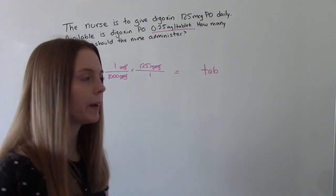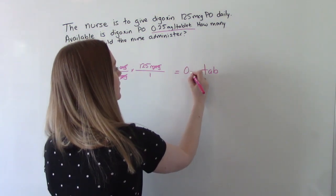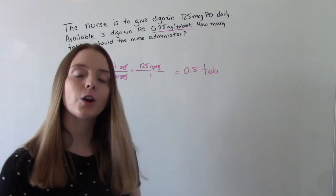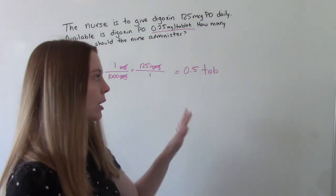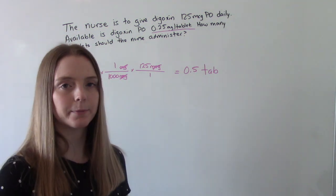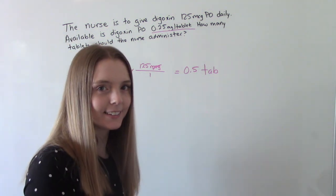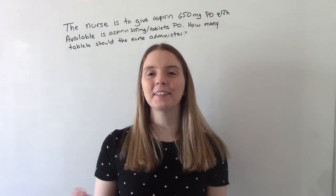Punch it into your calculator, do the math, and you get 0.5. So half a tablet. So that's how much we're going to get is half a tablet. Did you get it right? Let's do another one.